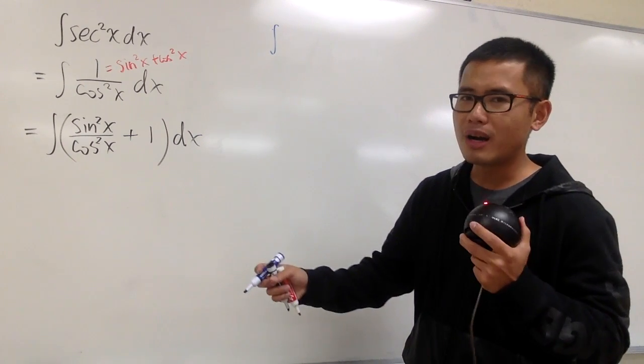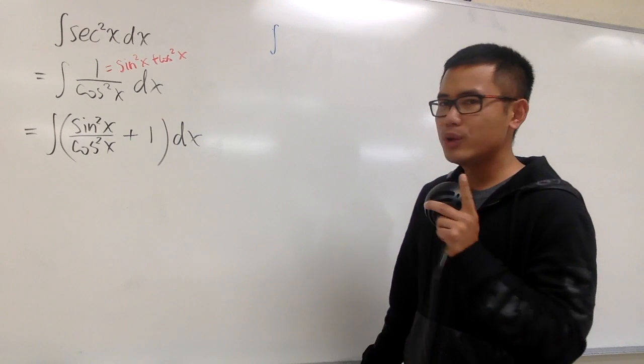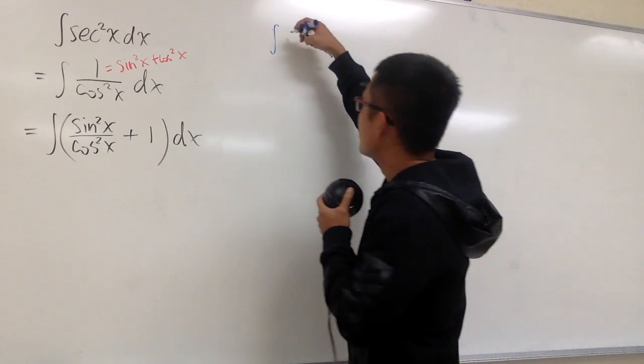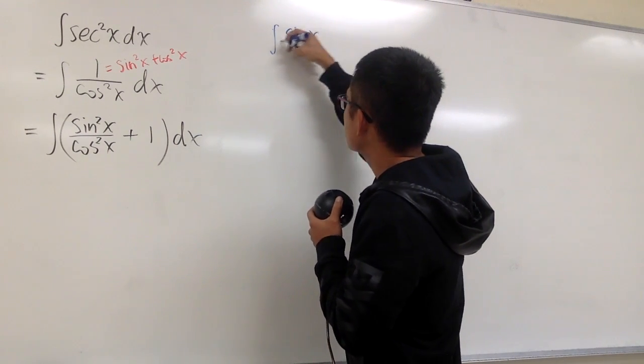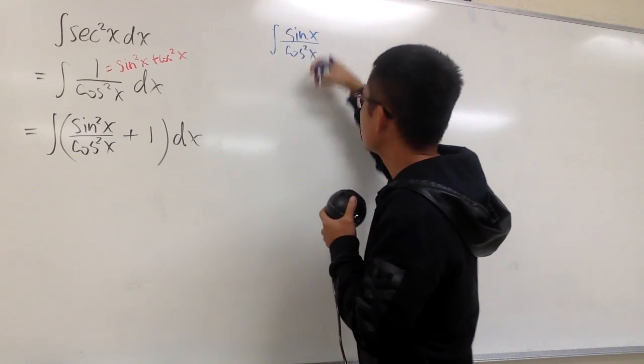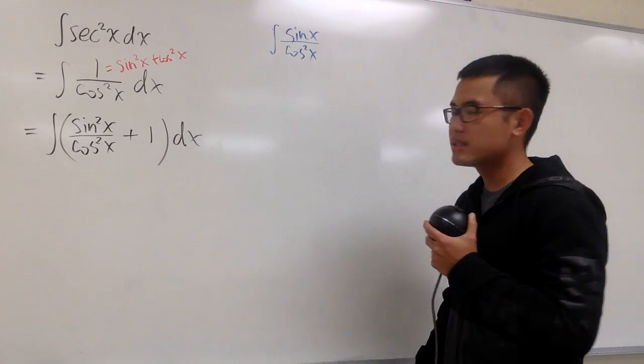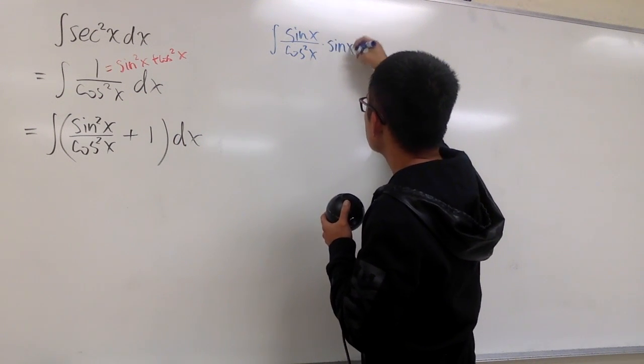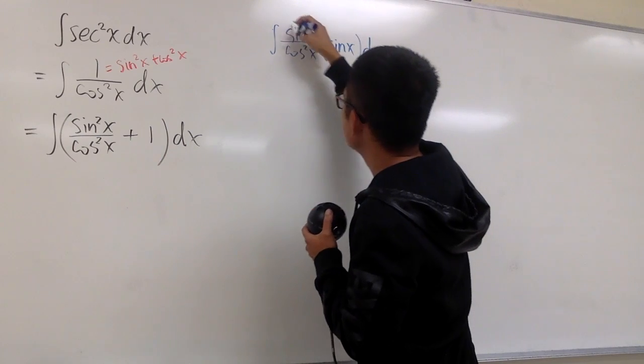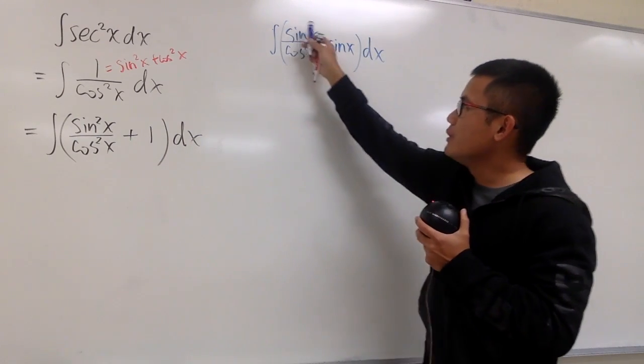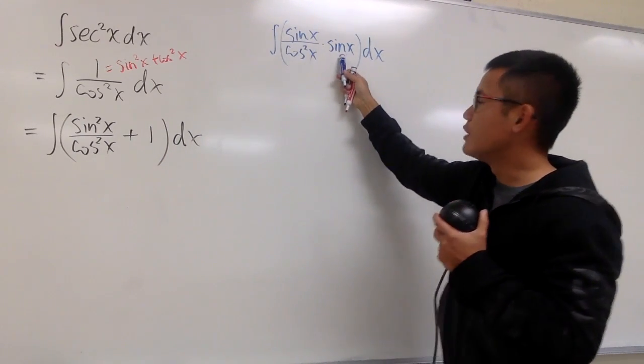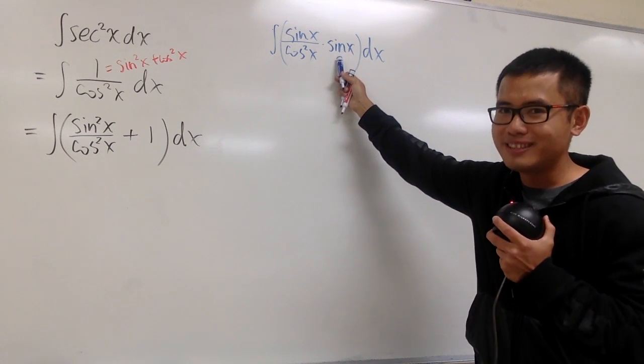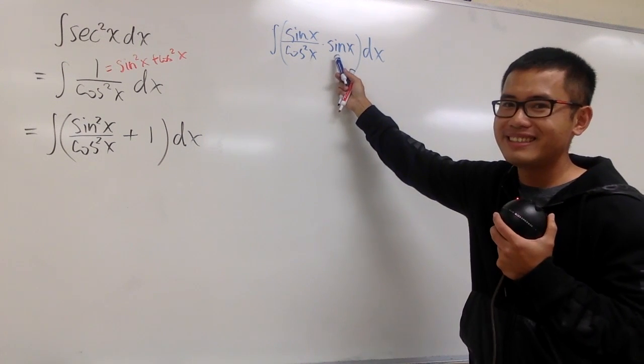Well, let me just break it apart. Because I know how to integrate this part, sine x over cosine squared x. And once I separate them, this is going to be multiplied by another sine x factor. I know how to integrate this part, and this is just an innocent sine x function. I can just differentiate this.